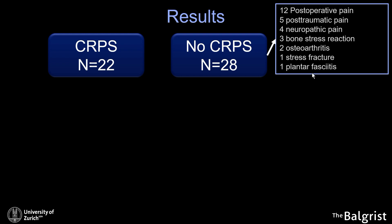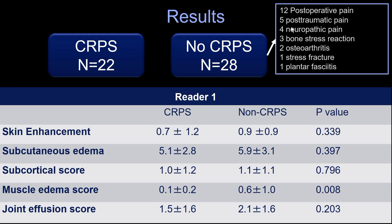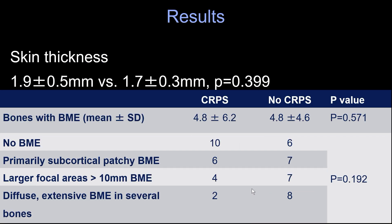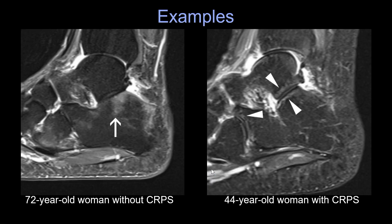The final diagnoses in the non-CRPS group included stress fracture, osteoarthritis, post-traumatic pain, and post-operative pain without fulfilling the Budapest criteria. Basically, no parameter was actually able to distinguish between these groups. The muscle edema score was actually higher in the non-CRPS group, so that's not helpful. For bone marrow edema, the number of bones and extent — everything was not statistically significant.